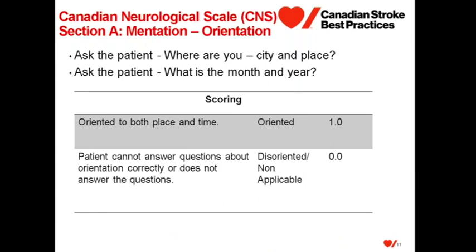We then move on to orientation. We assess orientation in two domains: place and time. We ask the patient where they are, what city, what place, and then what is the month and year. If it is the first three days of the month, the previous month is considered acceptable. Scoring is either oriented or disoriented. Oriented is scored if the patient is oriented to both place and time, receiving a score of 1. If the patient is not able to answer correctly, does not respond, or is not able to speak, they are scored as disoriented or not applicable, receiving a score of 0.